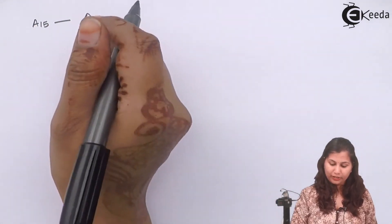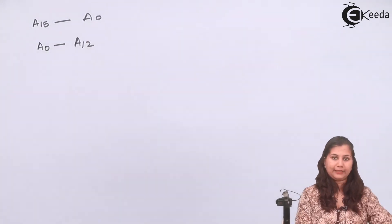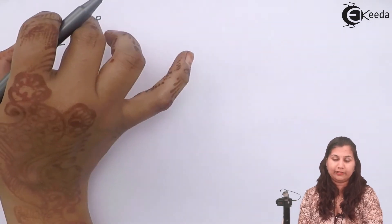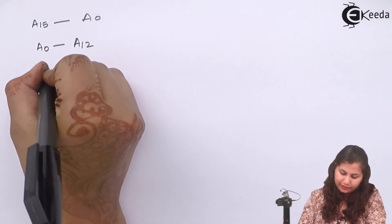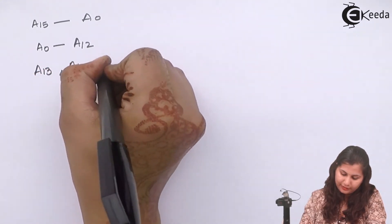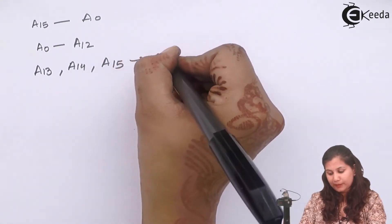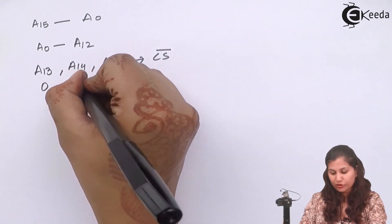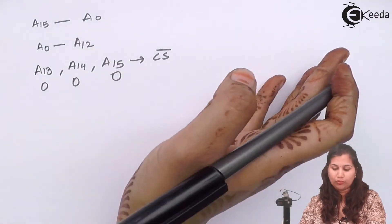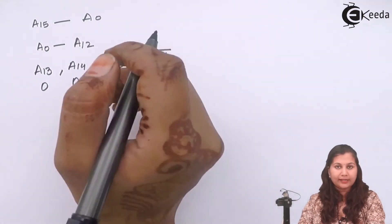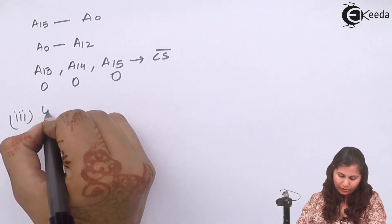We have A15 to A0 as our 16 address lines. Lines A0 to A12 will be used to select that chip because we need 13 address lines for it. The remaining lines A13, A14, and A15 are connected to the chip select signal, so they are always kept at logic 0, and the rest can have any value from 0 to 1, giving the address range.